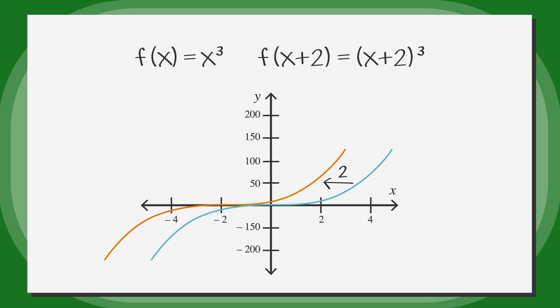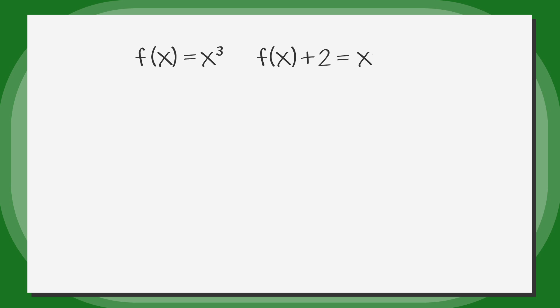Algebraically, if we add 2 to the function outside of the parentheses, we just add 2 to the original function to get the new function x cubed plus 2. Since f(x) is y, notice that the y values have been increased by 2, which results in shifting the function up by 2.